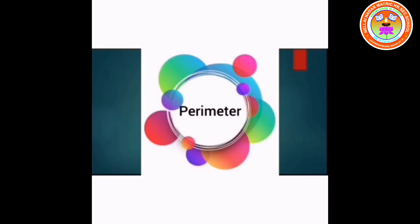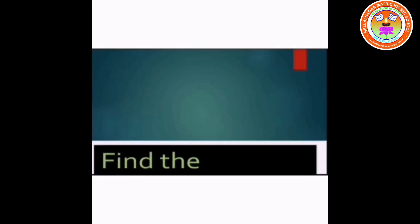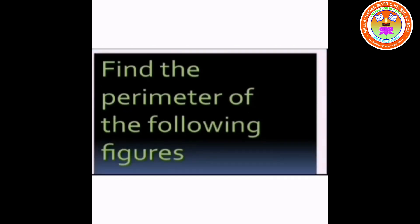This is the perimeter of the given rectangle ABCD. This is how we find the perimeter. Like that, we can try for other shapes, namely triangle, square, trapezium, etc. Students, let me do some exercises for you.